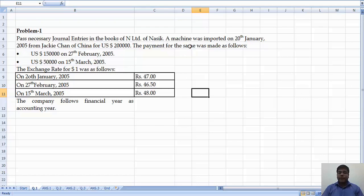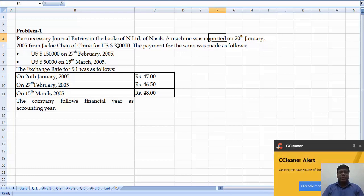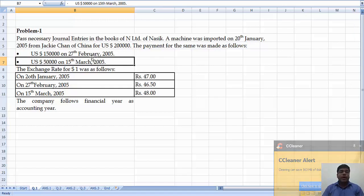So we have imported, and we have to make the payment for what we imported. The payment for the same was made as follows: for 2 lakh, we made the payment in two installments, on 27th February 2005 and 15th March 2005.